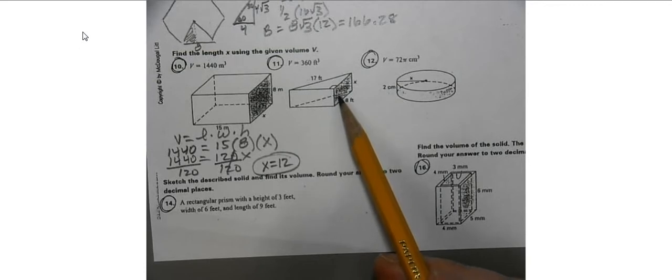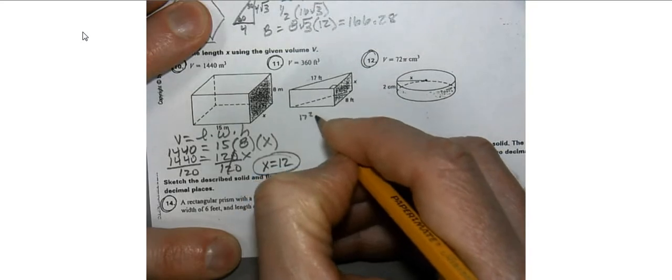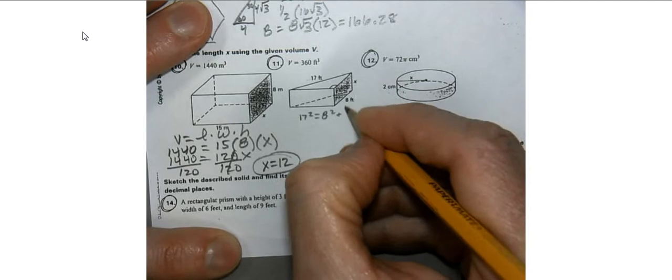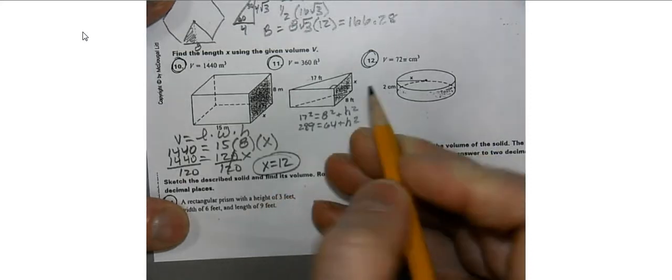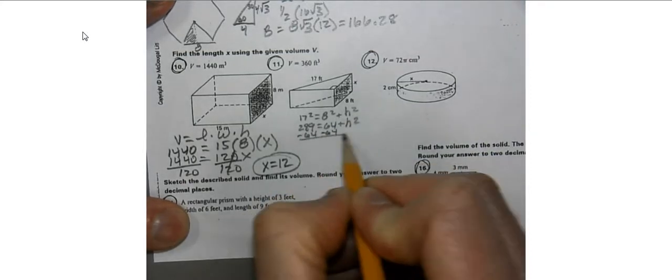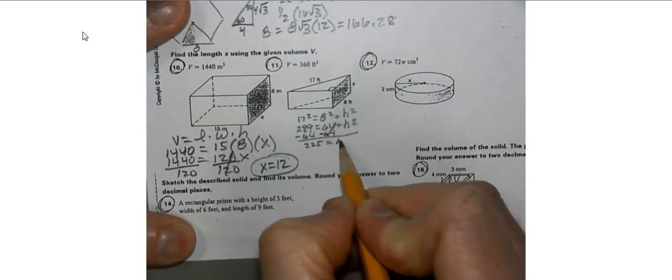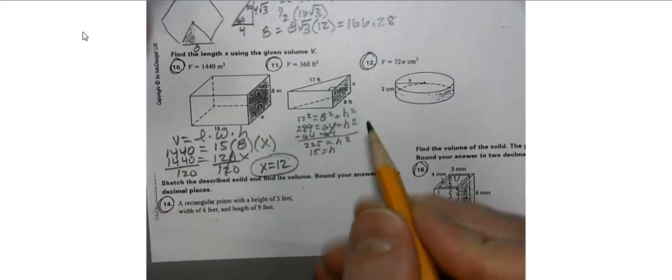Next, we're looking at a triangular prism. To figure out the volume, we need the area of the triangle, which requires the two perpendicular sides. We know the hypotenuse and one leg, so we calculate the other: 17 squared equals 8 squared plus h squared, so 289 equals 64 plus h squared. Subtracting 64 gives 225, and the square root gives h equals 15.